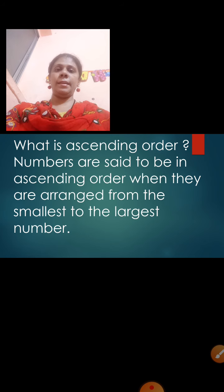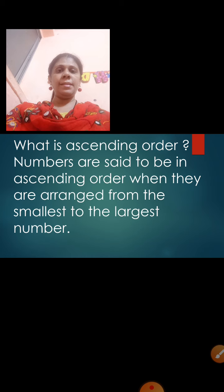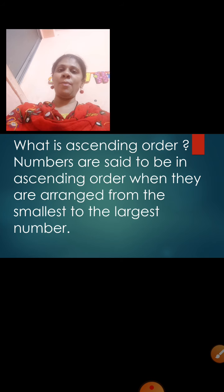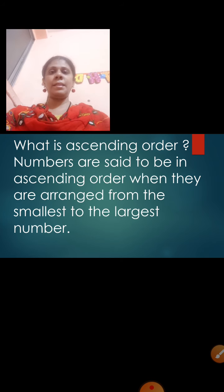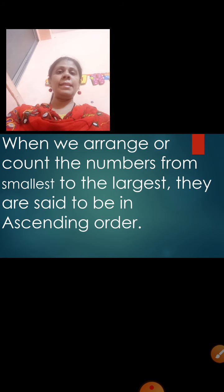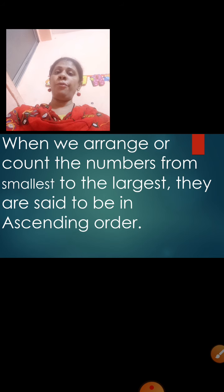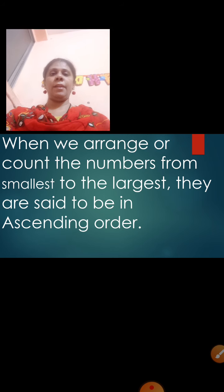Now what is ascending order? Numbers are said to be in ascending order when they are arranged from the smallest to the largest number. When we arrange or count the numbers from smallest to largest, they are said to be in ascending order.